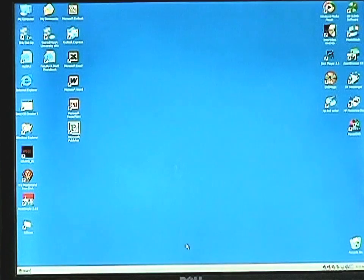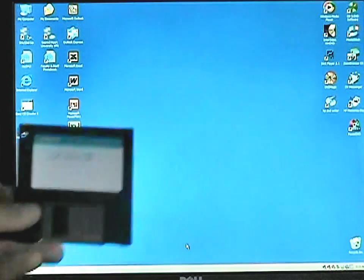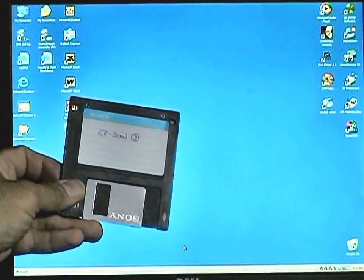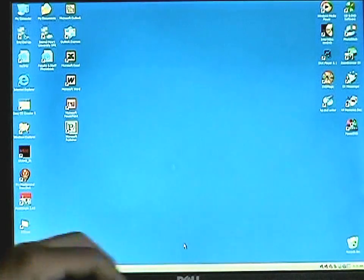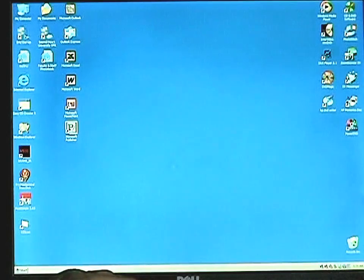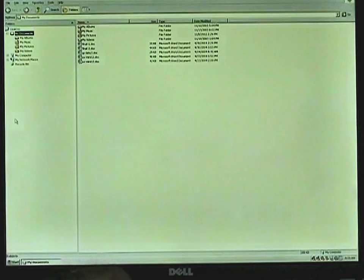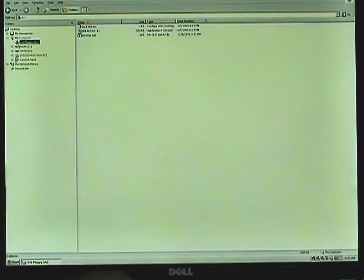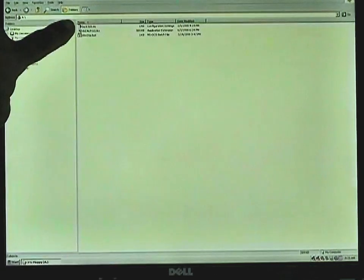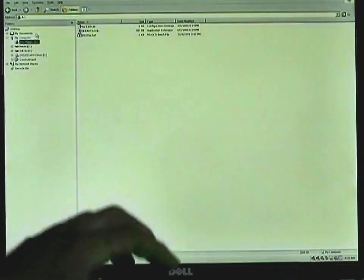Now there may be a disk 3 included with your software package, again depending upon the version of Windows you have. Insert this into the drive, and using Windows Explorer, copy the Buck 500 INI file.